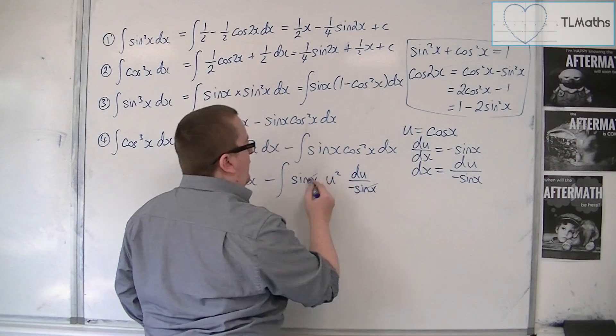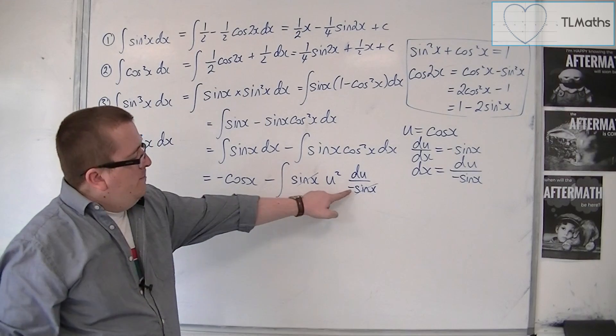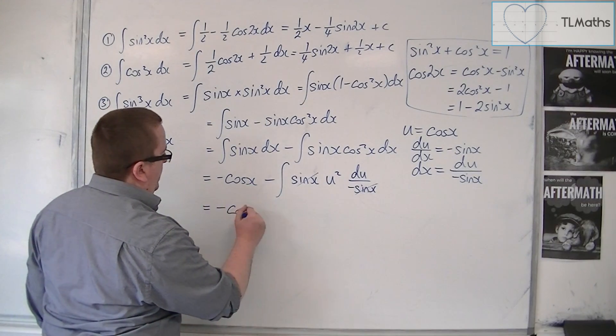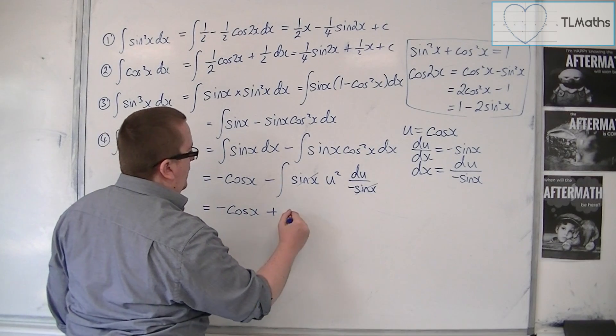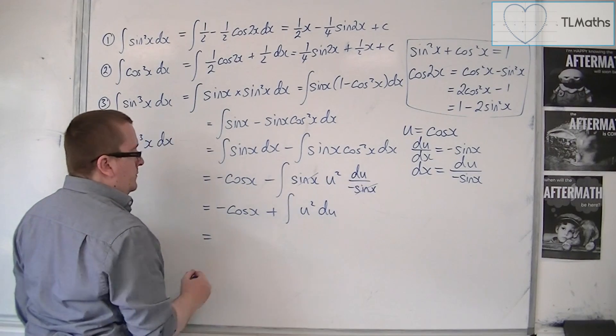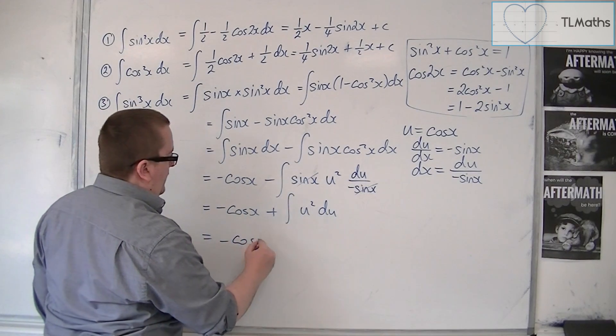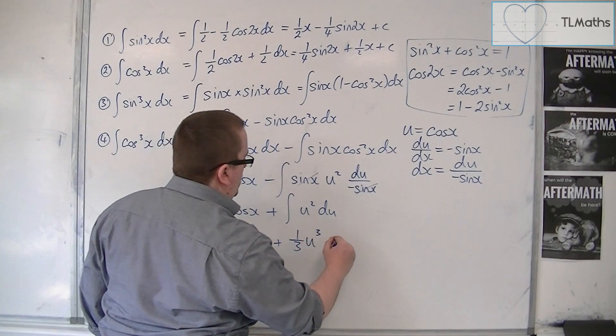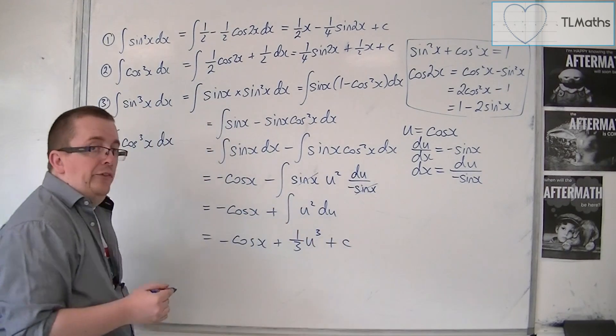Now, the sinx can cancel. And that minus sign can cancel with that one there. So minus cosx plus the integral of u squared du. So we have minus cosx plus one third u cubed plus a constant c.